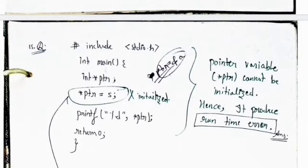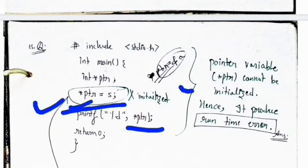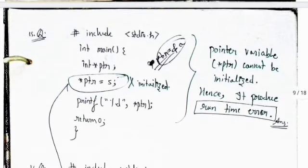Question 15 has int *ptr with print pointer value 5 directly. The value of the pointer is given directly as 5, which is wrong — we can't initialize a pointer variable directly with a non-address value. Since a pointer variable cannot be initialized this way, it produces a runtime error. The answer is runtime error.